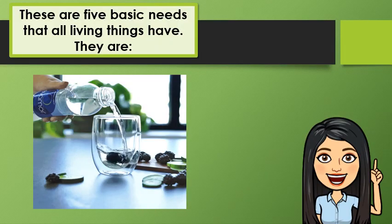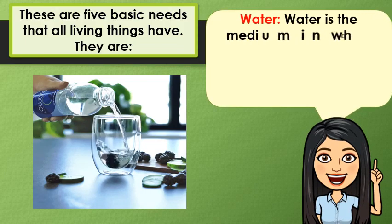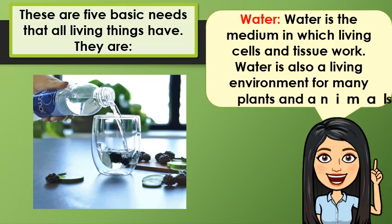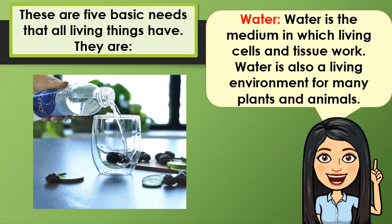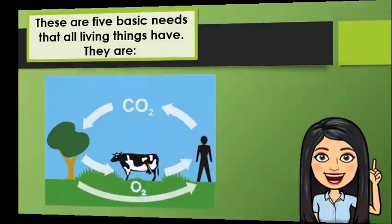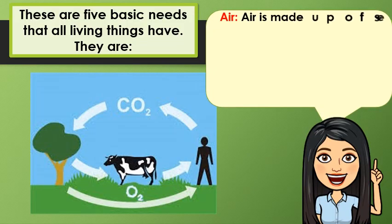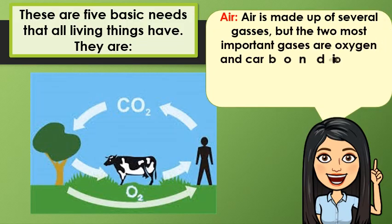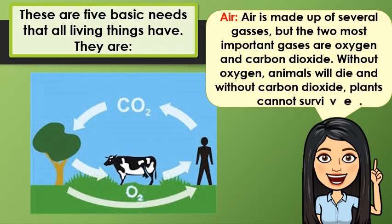The second need of living things is water. Water is the medium in which living cells and tissue work. Water is also a living environment for many plants and animals. Next, we have air. Air is made up of several gases, but the two most important gases are oxygen and carbon dioxide. Without oxygen, animals will die. And without carbon dioxide, plants cannot survive.